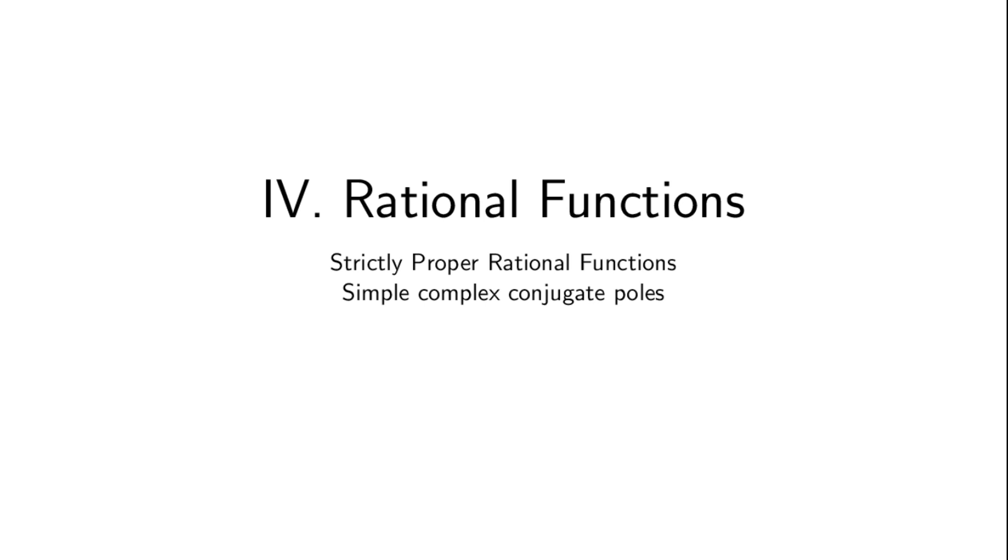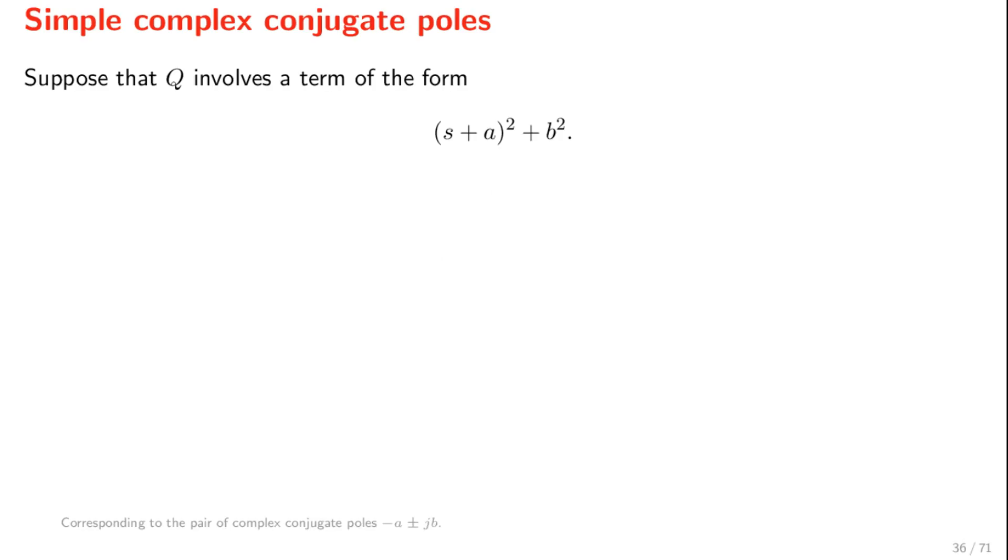Suppose that we have an s-domain function with a pair of complex conjugate poles and we need to determine its inverse Laplace transform. That is, suppose that the denominator polynomial q, when factorized, involves a term of this form. This means that minus a plus minus jb, where j is the imaginary unit, is a pair of complex conjugate poles of function f.